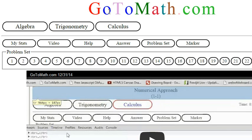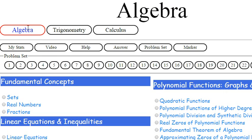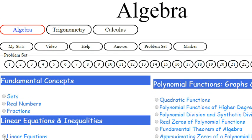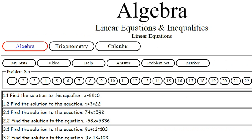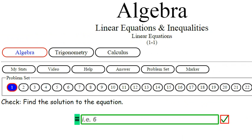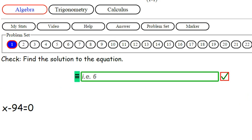Okay, we're over here at GoToMath.com. Let's click on the Algebra and go down to Linear Equations. Let's click on this number 1 here, 1-1.